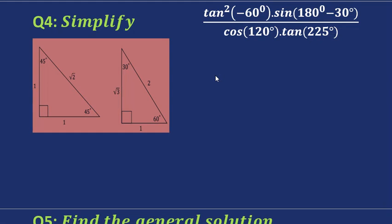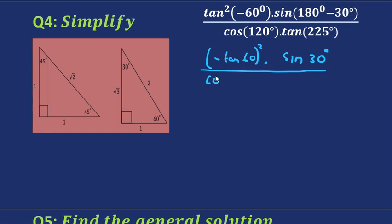For question 4, we've got another simplification problem. We know that 0 minus 60 is in the fourth quadrant, and tangent is negative in the fourth quadrant, but remember we need to square tangent. And 180 minus 30 is in the second quadrant, and sine is actually positive in the second quadrant. This expression we can write as 120, which we can write as 180 minus 60 — we want to write this in terms of our special angles. And tangent we can also write as 180 plus 45 degrees.